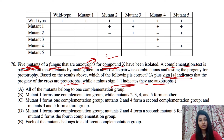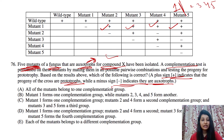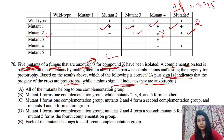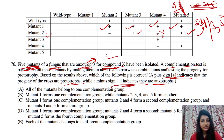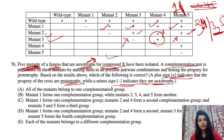Looking at mutant 1: it shows positive results with mutants 2, 3, 4, and 5 — so mutant 1 is in a different complementation group from all others. For mutant 2: it shows positive with mutant 3 and mutant 5, but negative with mutant 4 — so mutants 2 and 4 are in the same group. For mutant 3: it shows positive with mutant 4, but negative with mutant 5 — so mutants 3 and 5 are in the same group. Therefore, mutants 2 and 4 form one group, and mutants 3 and 5 form another.